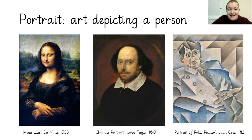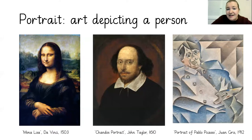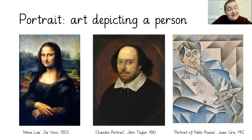On your screen you should be able to see a couple of examples of some famous portraits. We've got the Mona Lisa, which was made by Leonardo da Vinci in 1503 — a beautiful painting of a lady. In the middle, we can see the Chandos portrait, by John Taylor in around 1610, one of the most famous portraits depicting William Shakespeare. And on the far side, we can see a very different looking portrait — a portrait of Pablo Picasso, another artist. It doesn't look quite as realistic as the others, but it's still a portrait because it's still a piece of artwork showing a person.